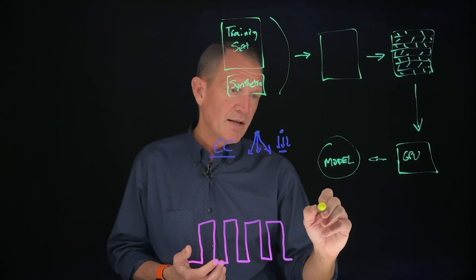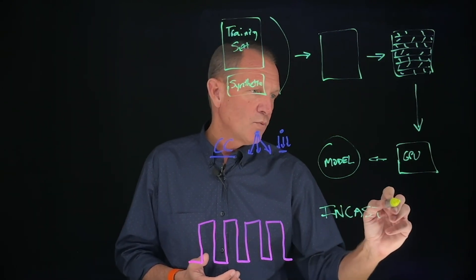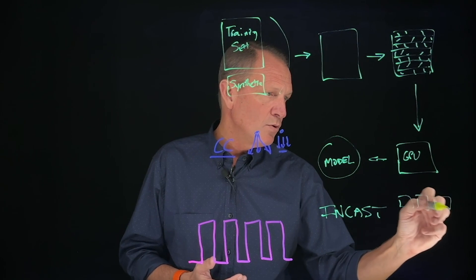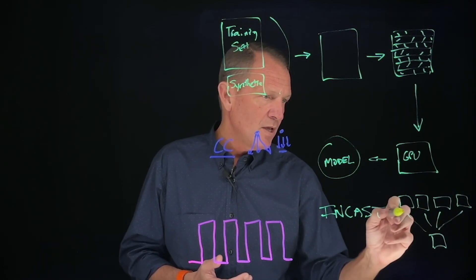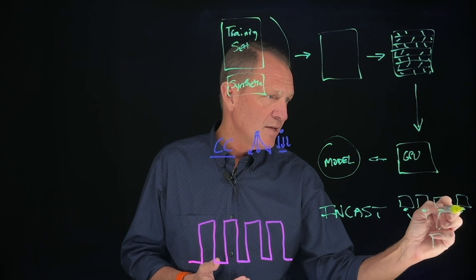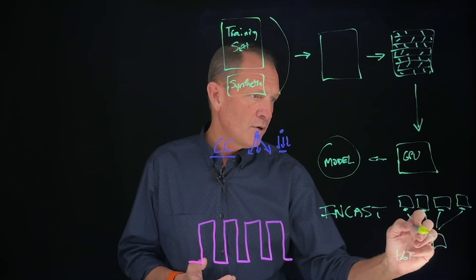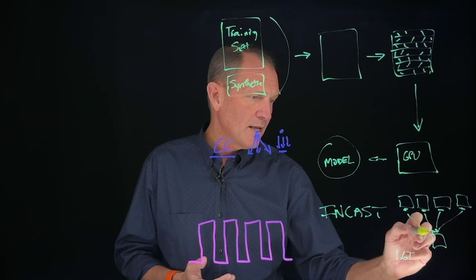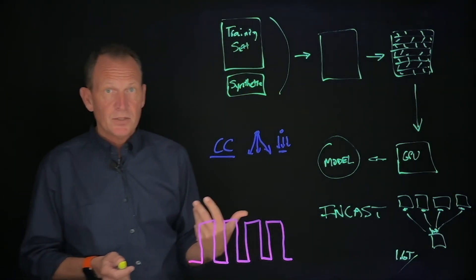We have a couple different problems that we identify. We have names for them. We have an in-cast problem, which is when many different GPUs are all trying to send to a single GPU at the same time. If every one of these is a 400 gig interface so that I have 1.6 terabits of information trying to flow to a single 400 gig interface here, I simply don't have enough room for all of that data to come in.